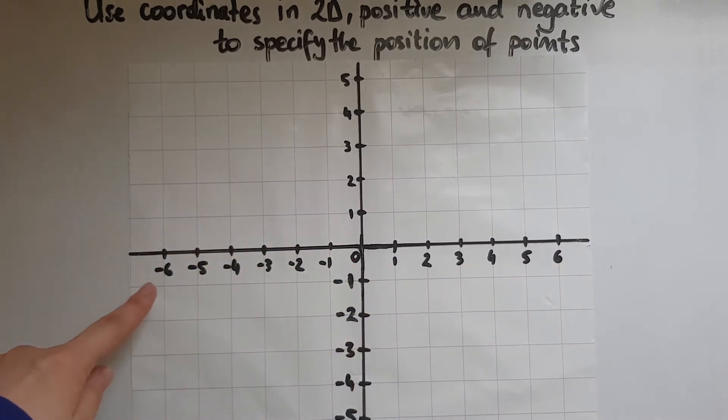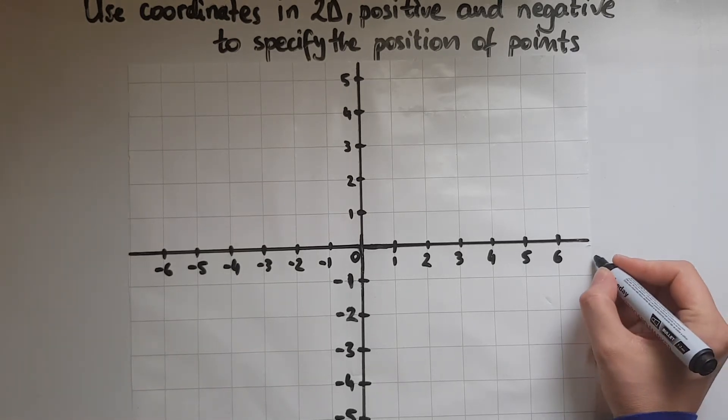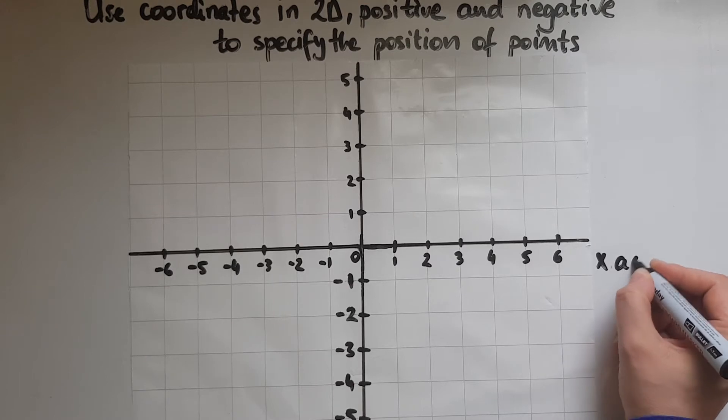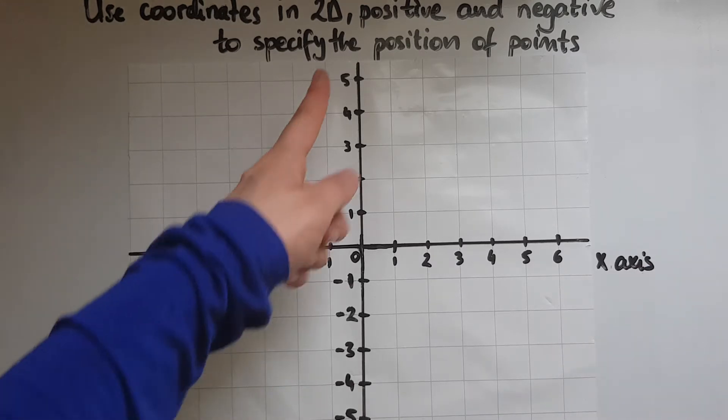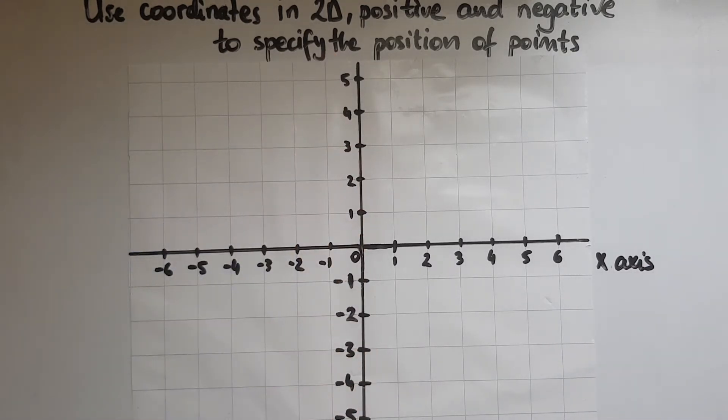And same thing across here. What we call this horizontal line is the x-axis, and what we call this vertical line is the y-axis.